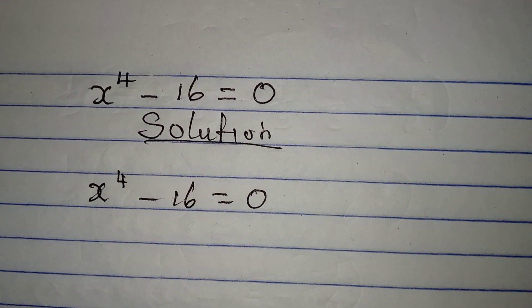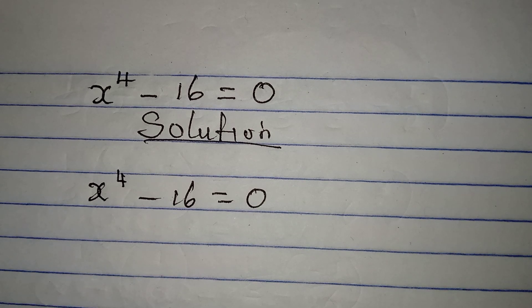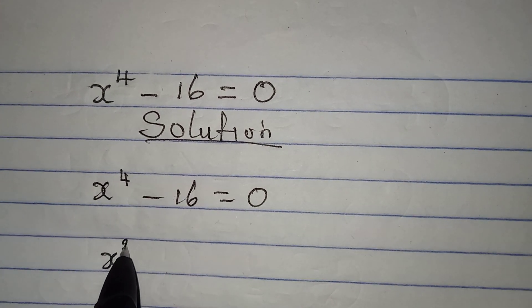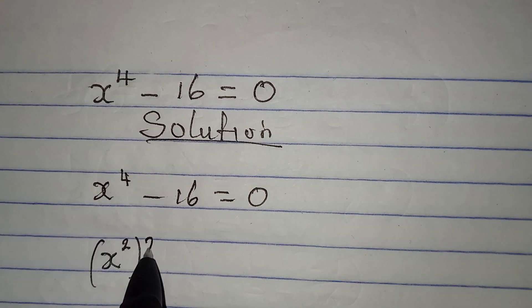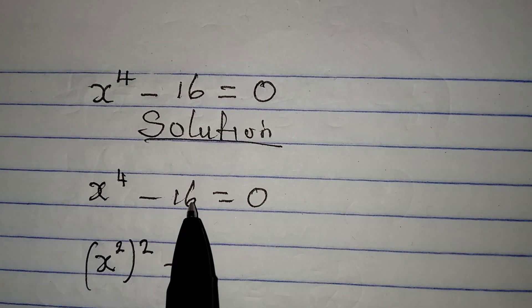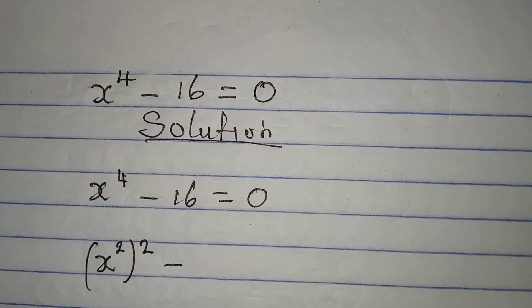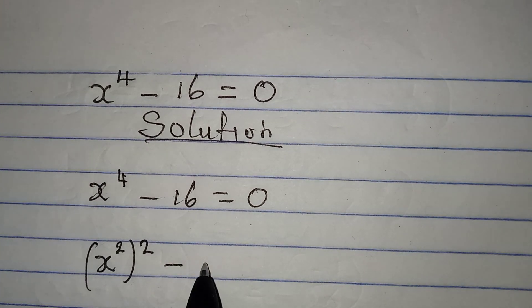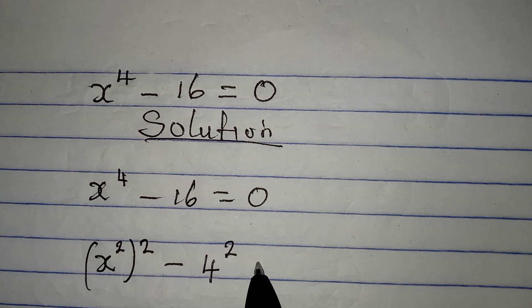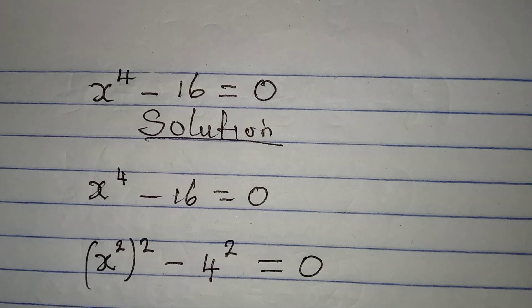For us to solve this, I want us to break this down. So we have x to the power of 2 to the power of 2 minus, here we have 16. Now 16 is the same thing as 4 to the power of 2. And this will give us 0 here.